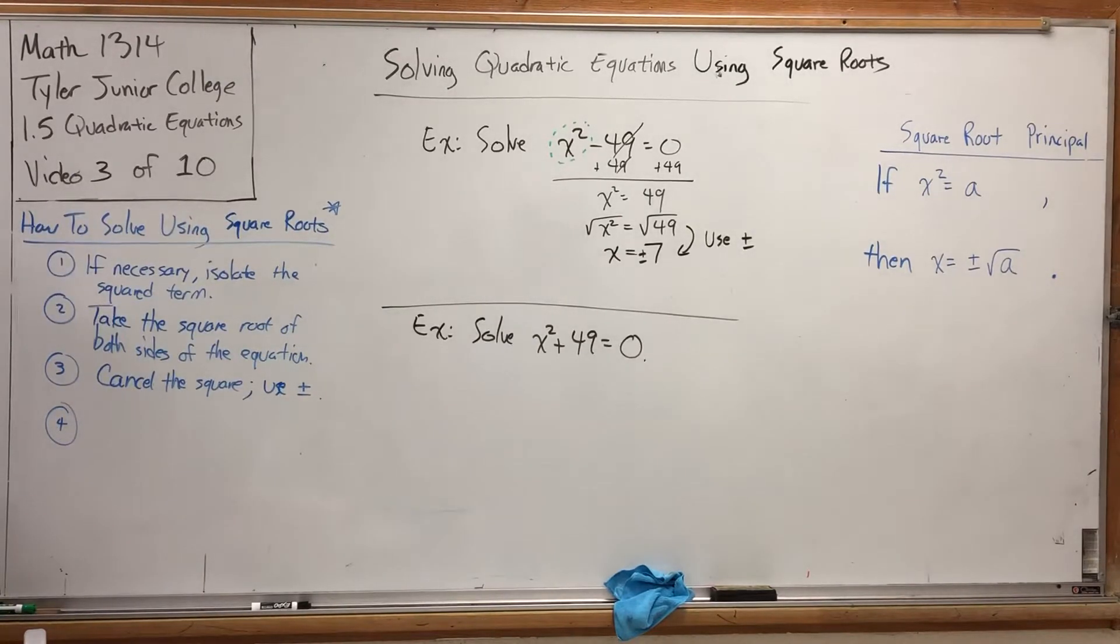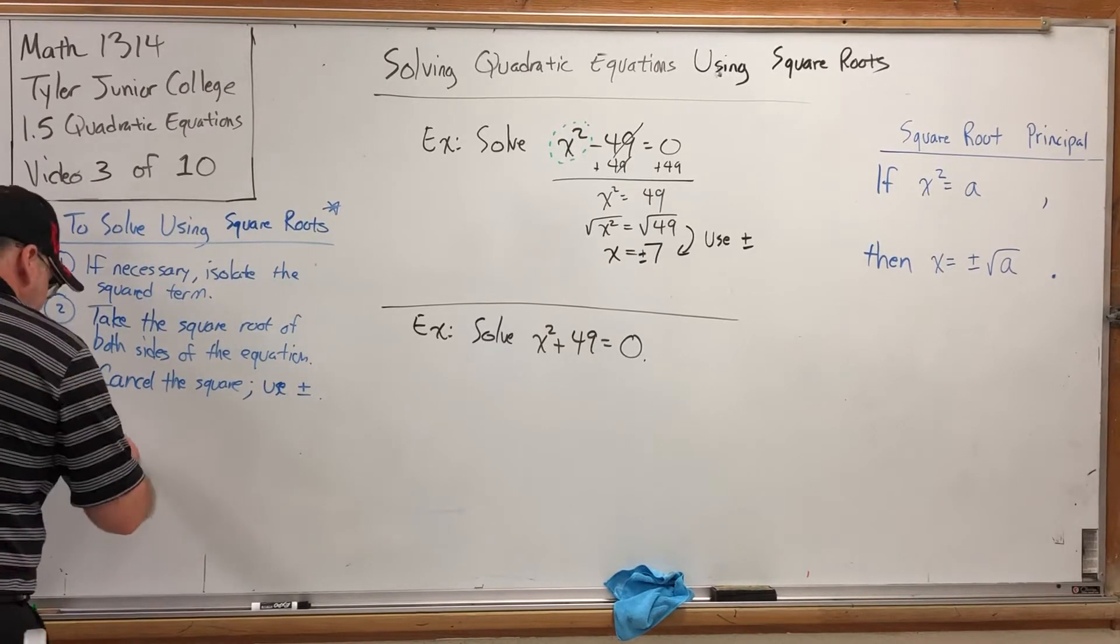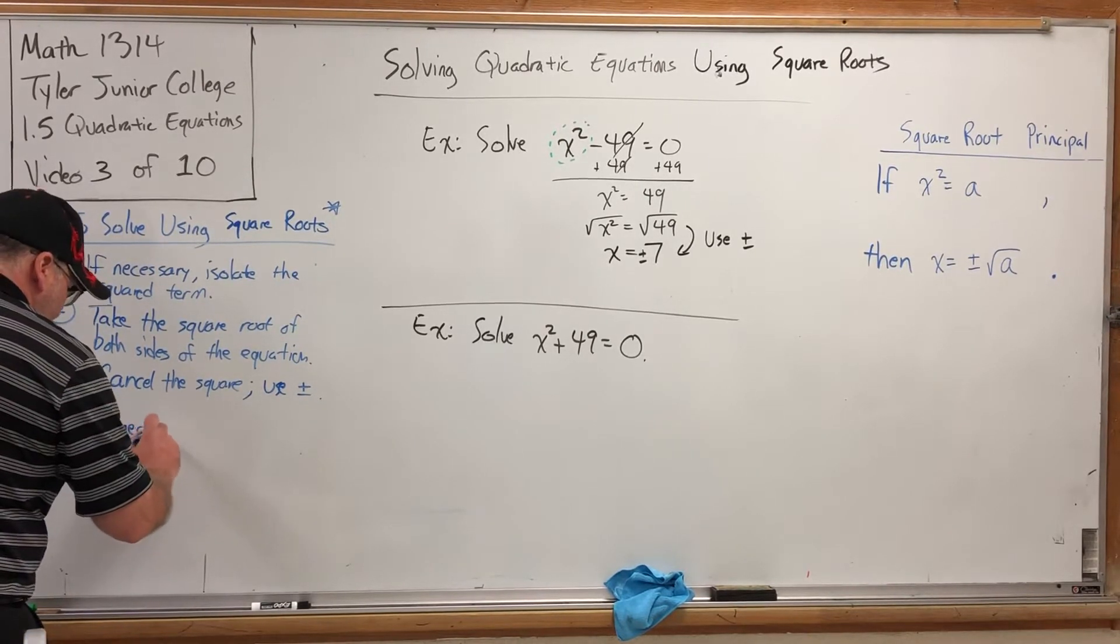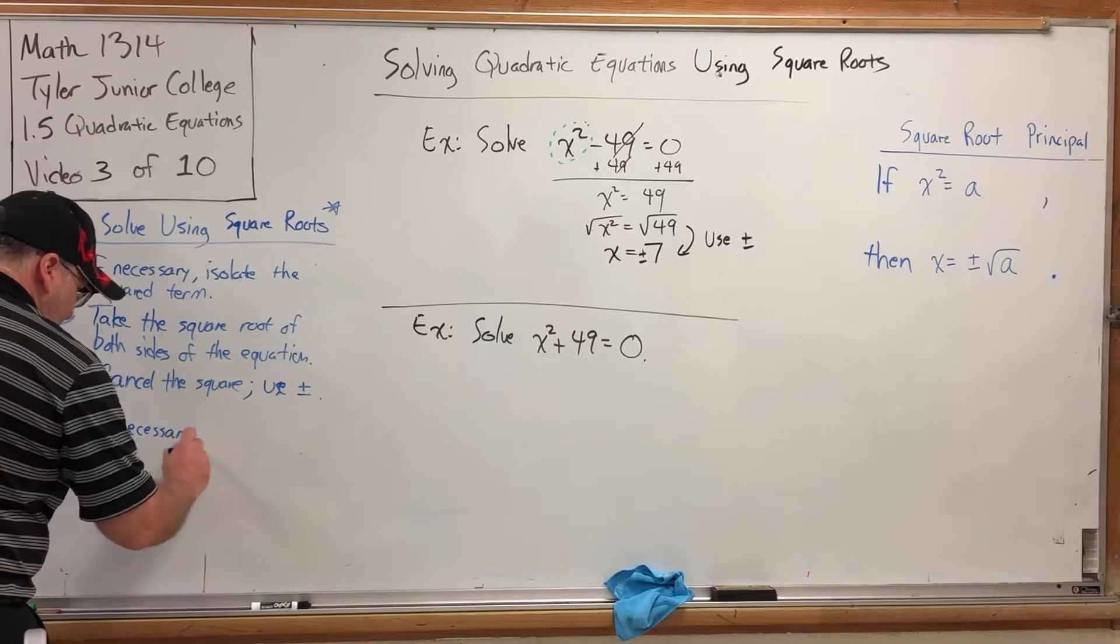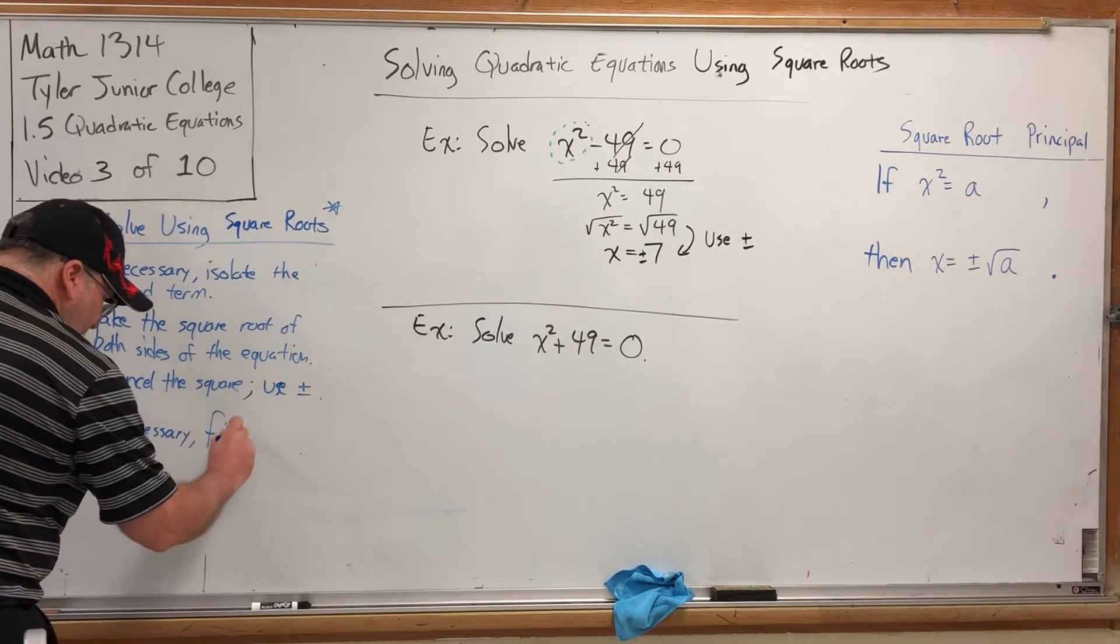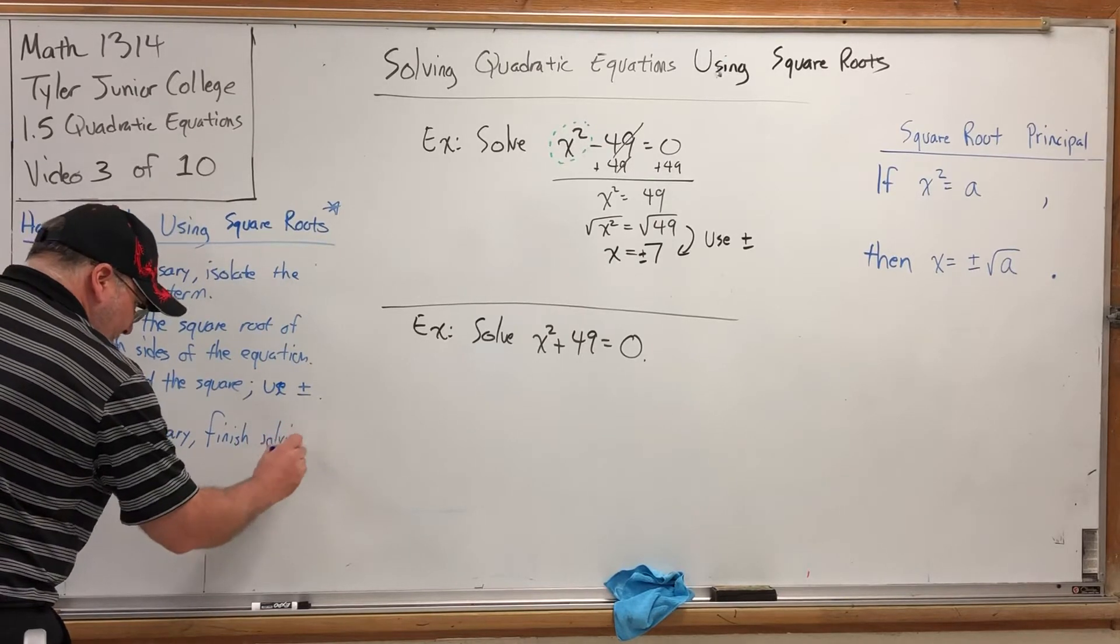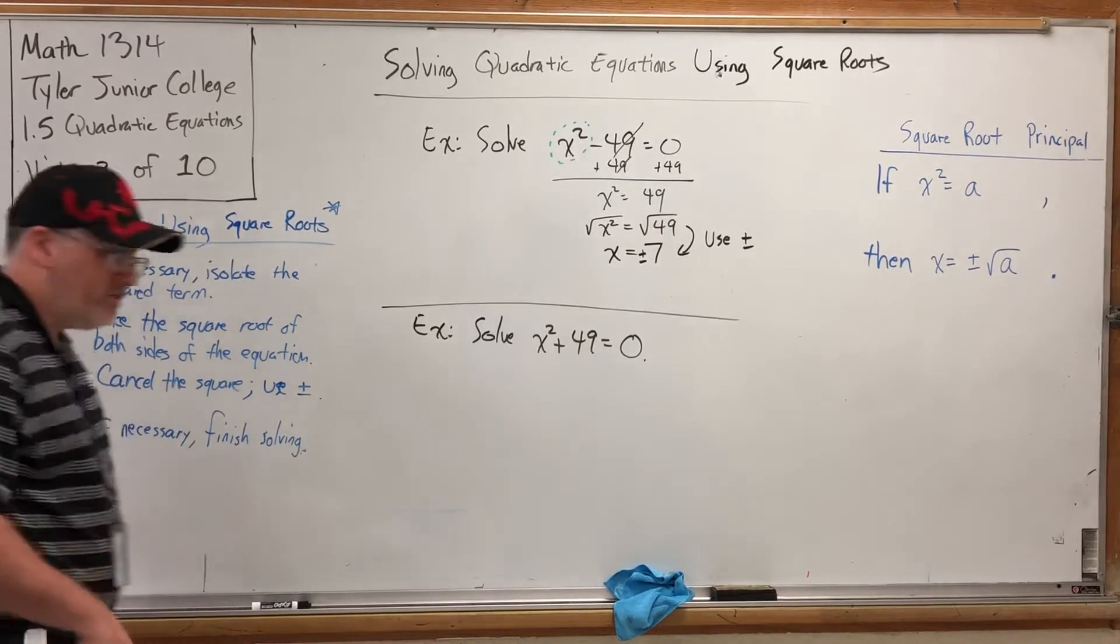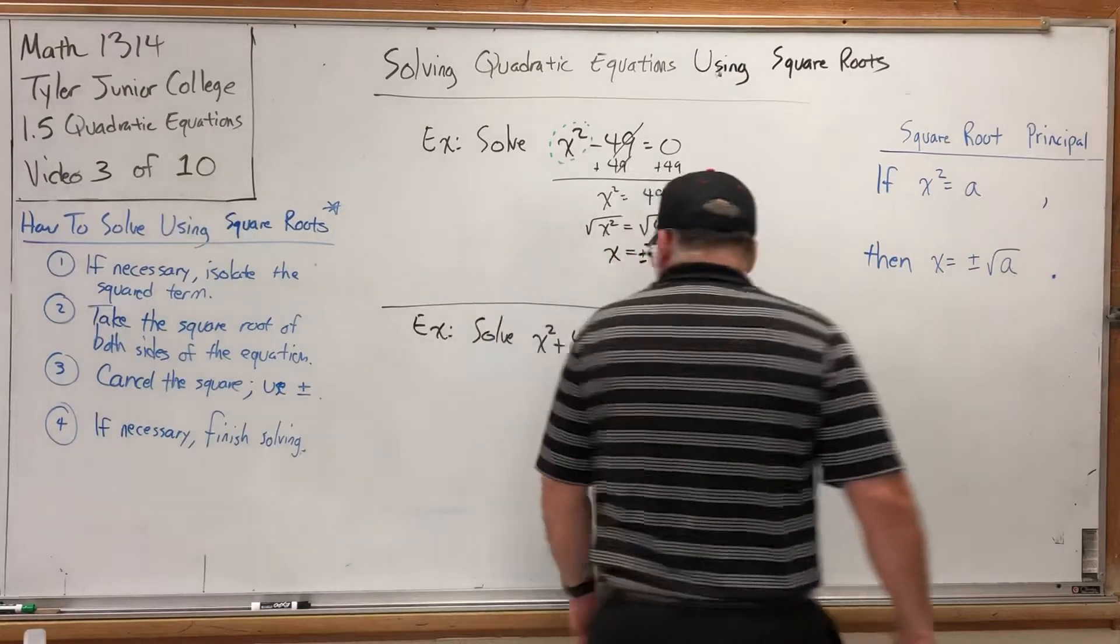So, what's the fourth step? Well, the fourth step hasn't been necessary yet in this example or the next one, but I'll go ahead and let you in on it. The fourth step is, if necessary, finish solving. I'll show you an example in a moment where it is necessary because we won't be done after using the square root. But let's see if we can solve this one.